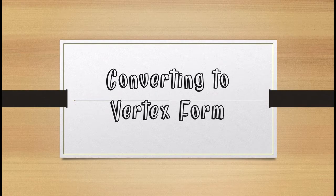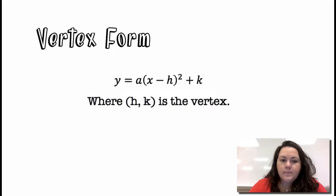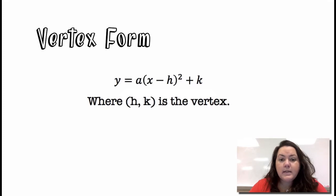Hey there Seahawks, it's Ms. Adams and in this video we're going to talk about converting to vertex form. Vertex form looks like this: Y equals A times the quantity X minus H, squared, plus K, where H and K is our vertex.